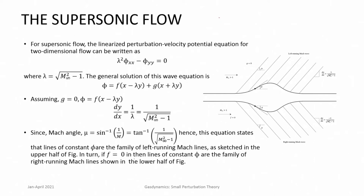In supersonic flows, the value (1 − M∞²) in the perturbation relation goes negative because M∞ is greater than 1. Consequently a change is made: it is written as minus of (M∞² − 1). Then the equation becomes λ² φ_xx − φ_yy = 0, where λ = sqrt(M∞² − 1). This is applicable for flows which are supersonic, that is M∞ greater than 1.